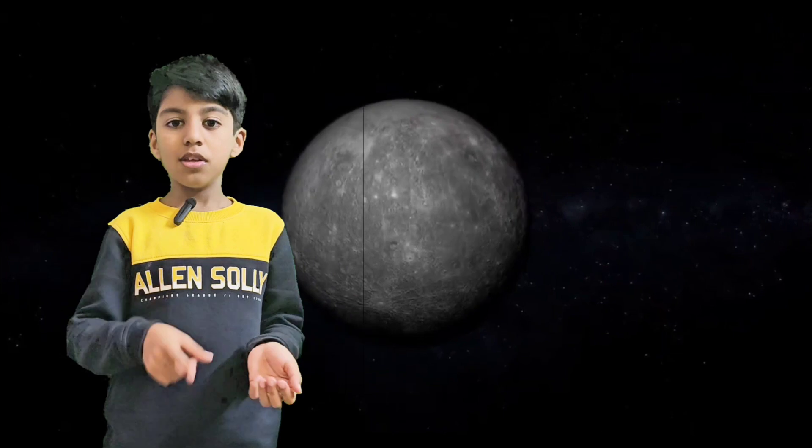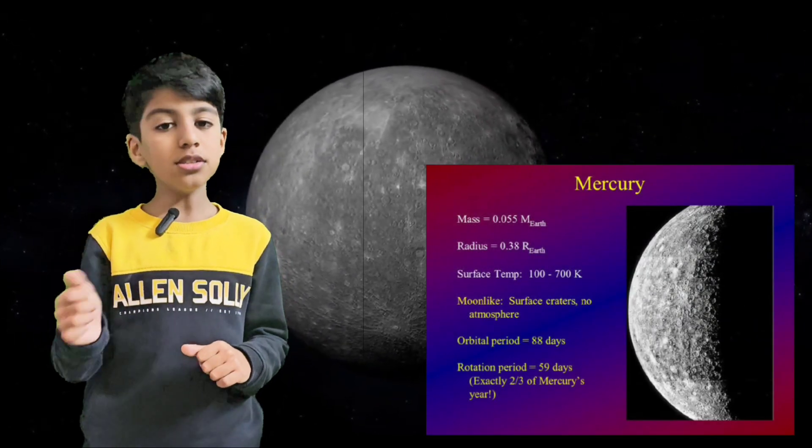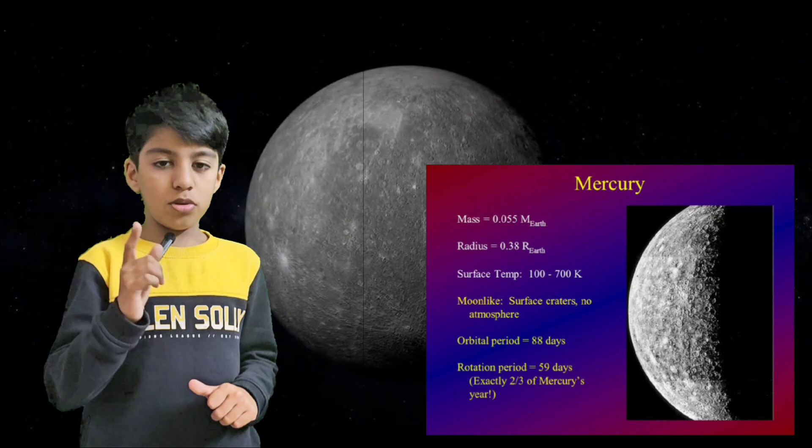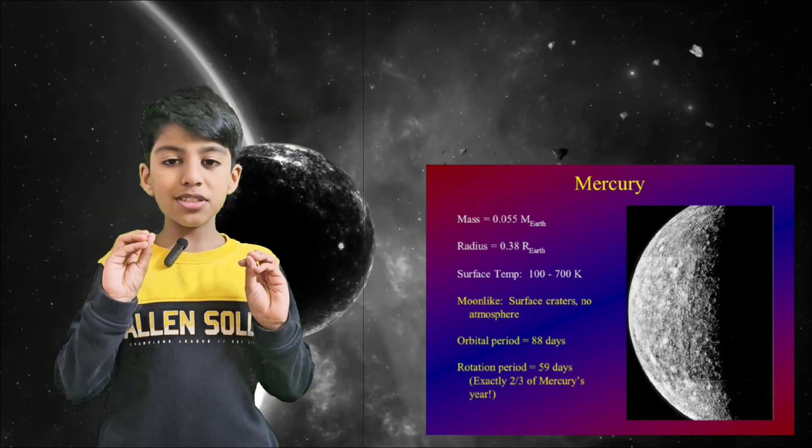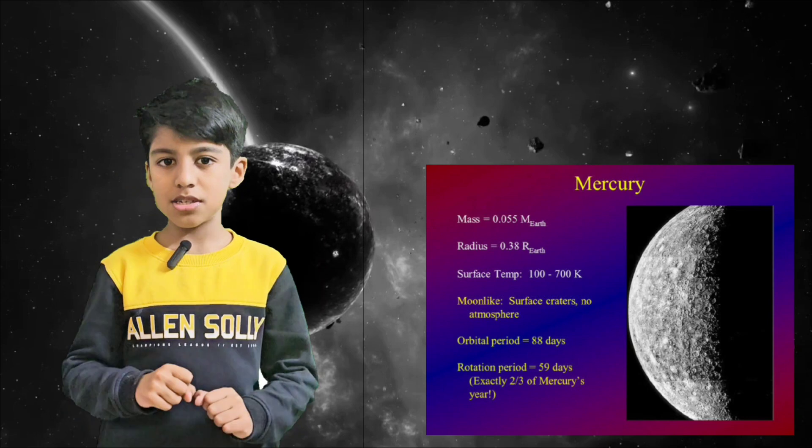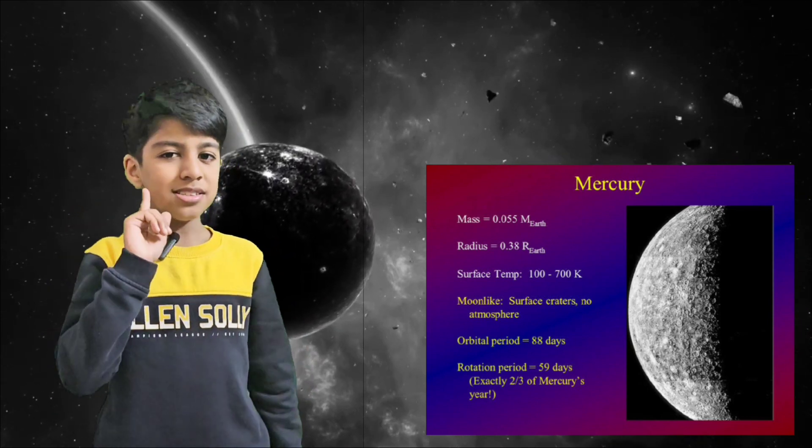The mass of Mercury is 5.5 percent of the Earth's mass. Do you know the one day on Mercury is 56.7 Earth days? It also means that 56 Earth days and 7 hours.